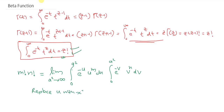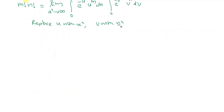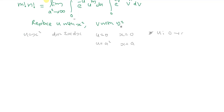Now let us replace u with x squared and also replace v with y squared. So u equals x squared. If I differentiate, du equals 2x dx. When u equals 0, x equals 0, and when u equals a squared, x equals a. So the limit of u from 0 to a squared becomes the limit of x from 0 to a.